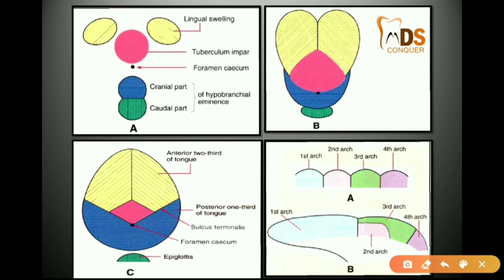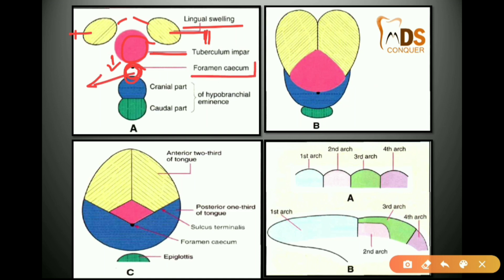The two lingual swellings are developed from the medial-most part of the mandibular arches — they proliferate and give rise to the lingual swellings. The tuberculum impar separates these two lingual swellings. Behind the tuberculum impar is a depression where the epithelium proliferates to first form the thyroglossal duct, which then forms a depression called the foramen cecum. The thyroglossal duct gives rise to the thyroid gland.